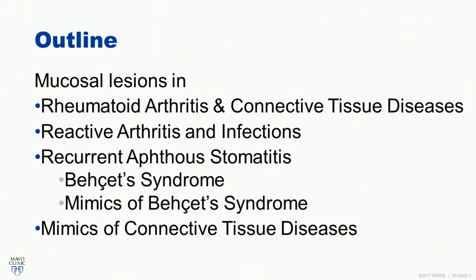We'll look at mucosal lesions, and we'll expand it a little bit to include genital lesions, some skin stuff that are seen in connective tissue diseases and rheumatoid arthritis, infectious arthritis, reactive arthritis, and then talk a bit about aphthous stomatitis, which is a very common clinical problem, oftentimes suggesting the possibility of Behçet's disease, which is a pretty rare condition in this country. And we'll talk about some mimics that we need to consider when we're seeing patients with a lot of mucosal problems.